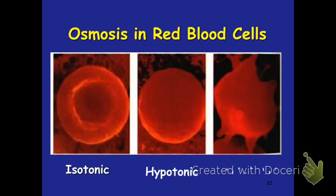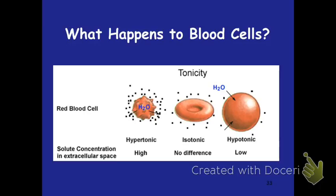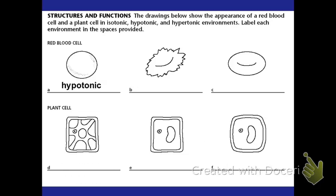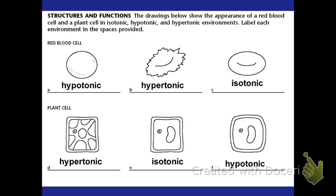Here are actual pictures of osmosis in red blood cells. The one on the far left is isotonic because it looks normal. The one in the middle is hypotonic because it is swelled up. The last one is hypertonic because it is shriveled up and lost its shape. You should have labeled: hypotonic, hypertonic, isotonic for the red blood cells, and hypertonic, isotonic, hypotonic for the plant cells.